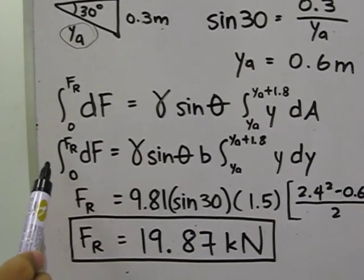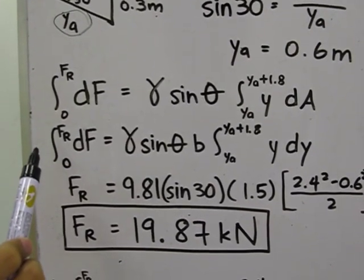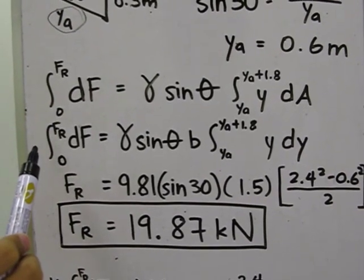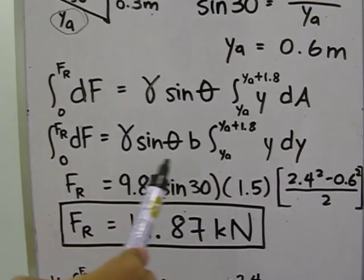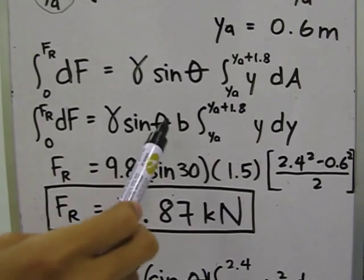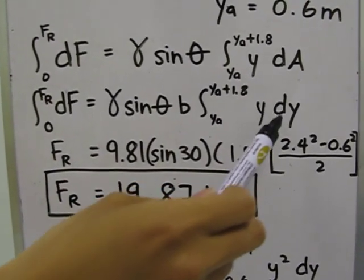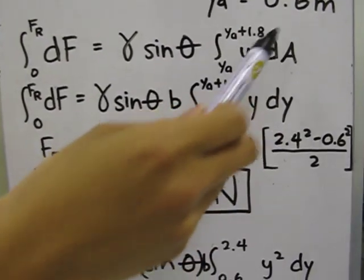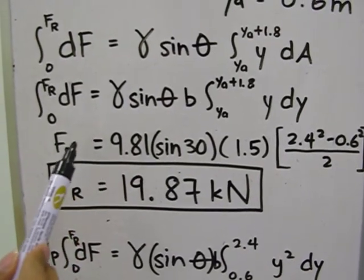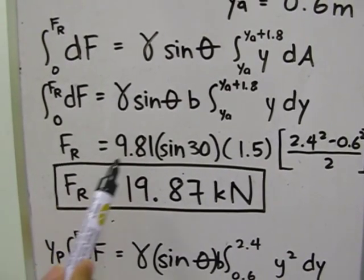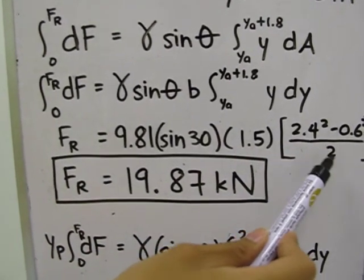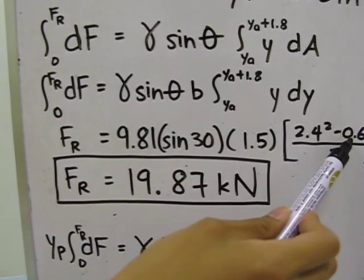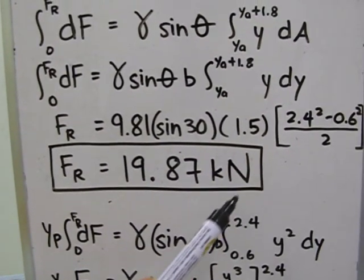Going back to the equation, D-A is changed to B times D-Y and the whole equation is integrated. The limits are then Y-A, which is 0.6 meters up to 0.6 plus 1.8 meters, which is 2.4. Plugging in all the values required, which are already known, we obtain FR, which is 19.87 kilonewtons.